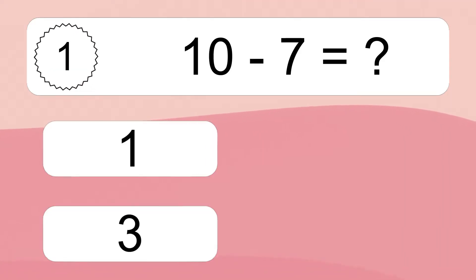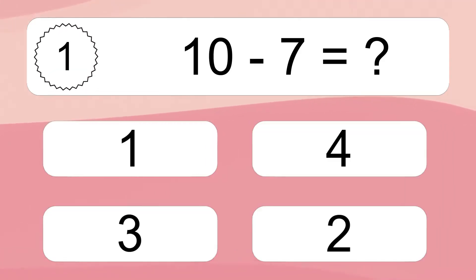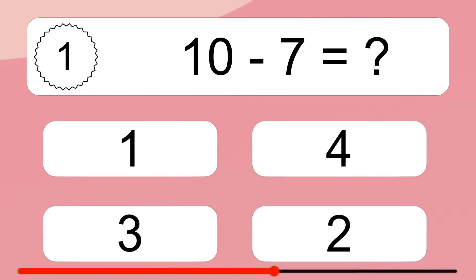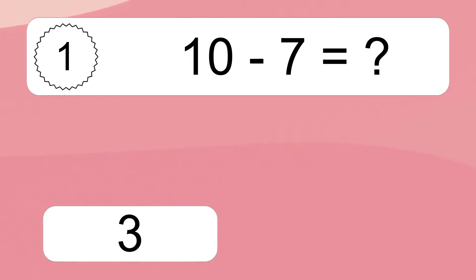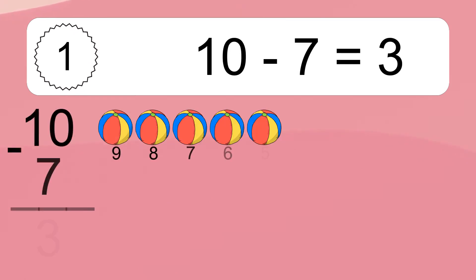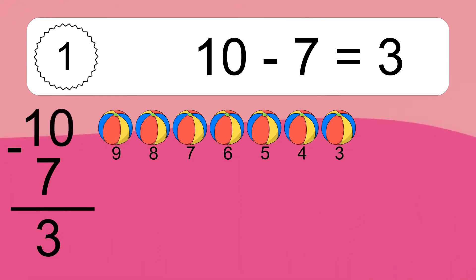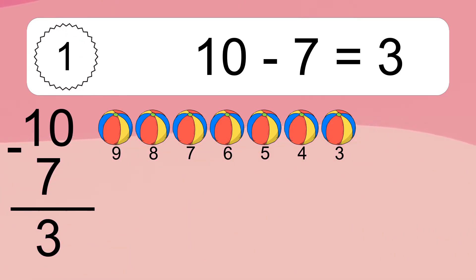10 minus 7 equals what? 10 minus 7 equals 3. Let's count it: 9, 8, 7, 6, 5, 4, 3.